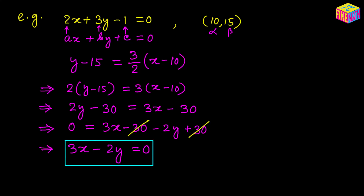So 3X minus 2Y equals 0 is the equation of the straight line perpendicular to 2X plus 3Y minus 1 equals 0 that also contains the point (10, 15). I hope everything made sense. Thank you for watching — see you in the next video.